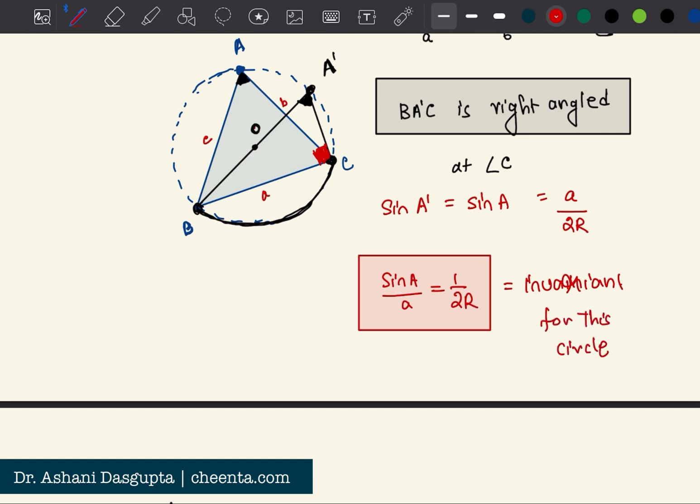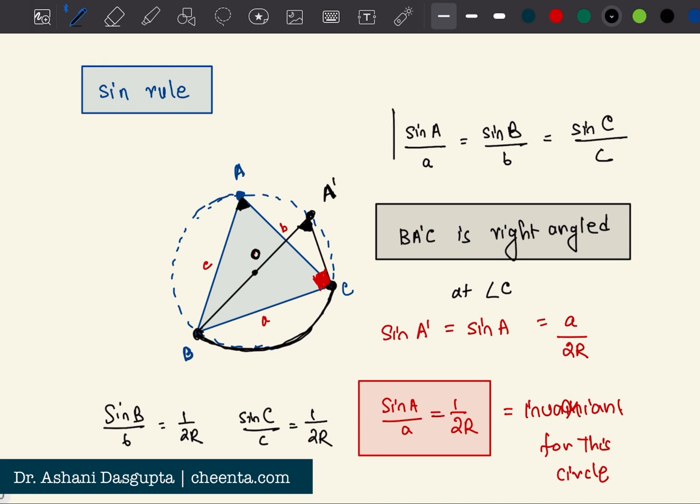So what we just saw is sine of A over small a is independent of the angle A and the length of the side A. In exactly the same way you can show sine B by small b is also 1 by 2R and sine C over small c is also 1 by 2R, so all of them are equal to one another.